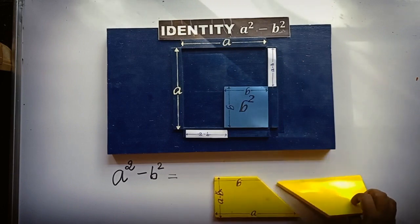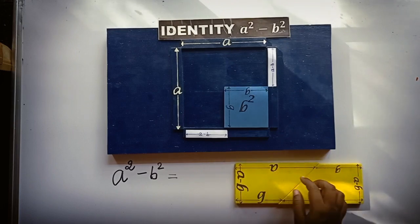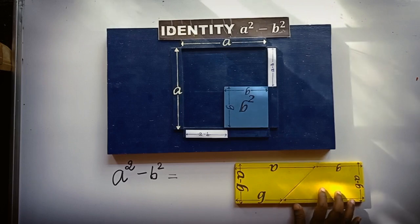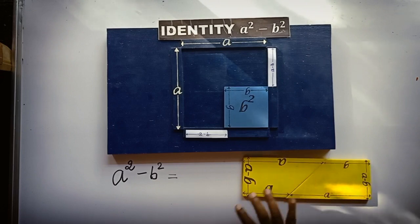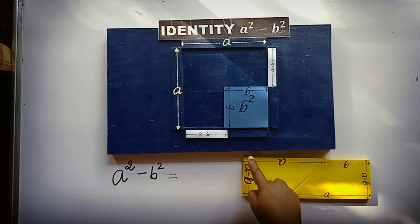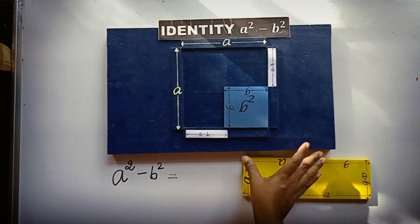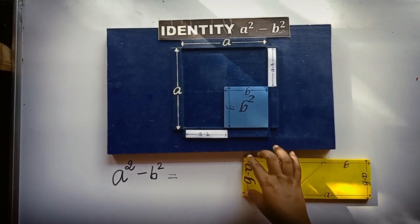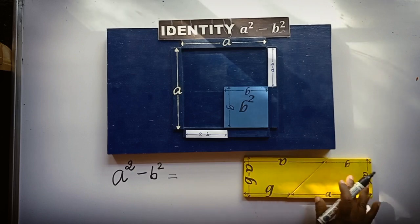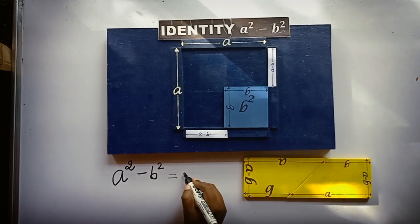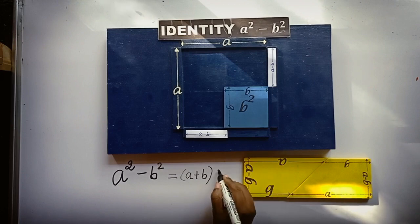The yellow part is equal to A square minus B square. Now remove the two pieces and arrange them — it forms a rectangle. See here, it forms a rectangle. The area of the rectangle is length into breadth. Here the length is A plus B and the breadth is A minus B. So the area of the rectangle is A plus B into A minus B.